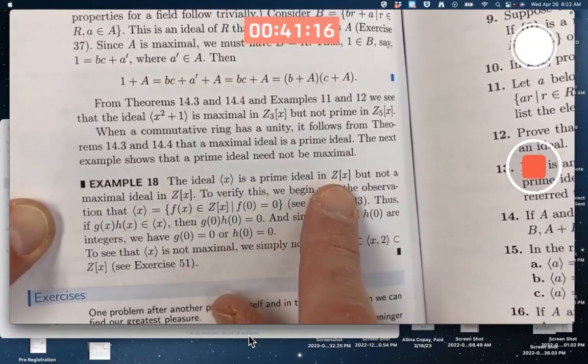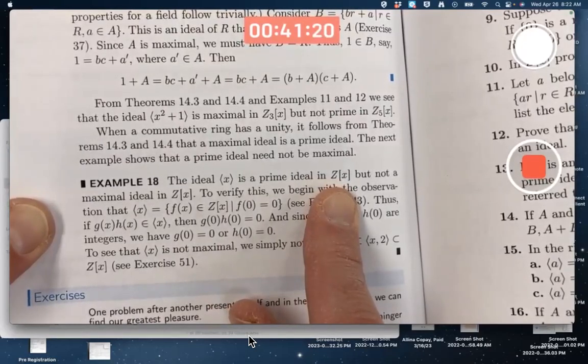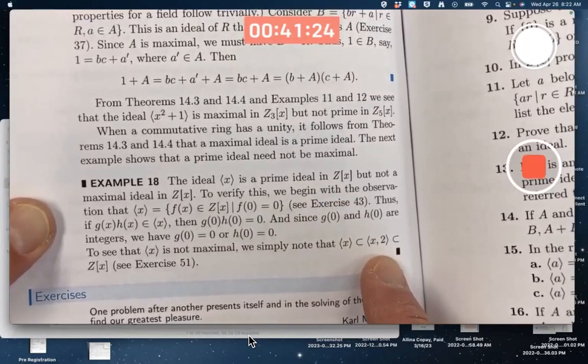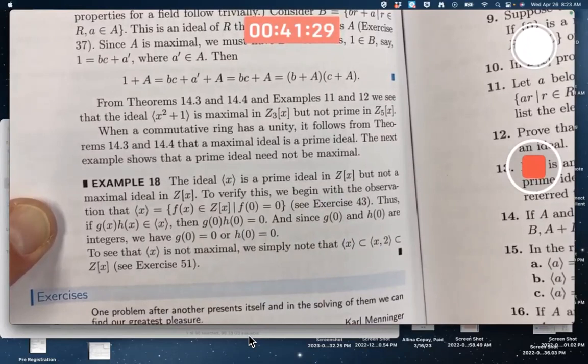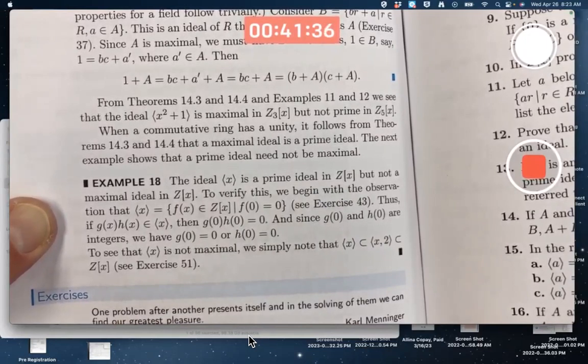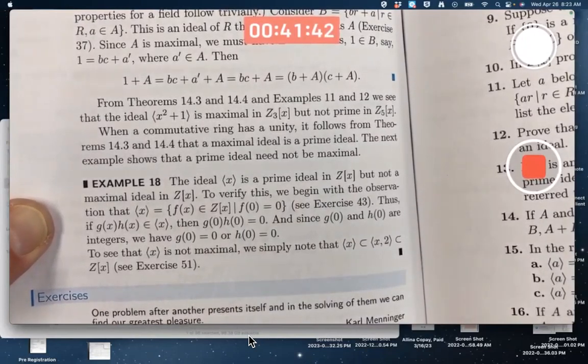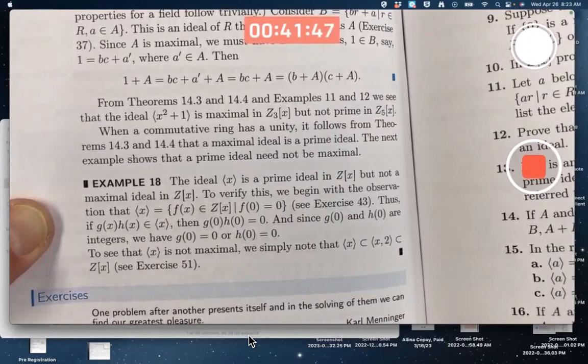But if you change Z[x] to R[x] or Q[x], then it turns out without proof that this actually must be the entire ring, because it's no longer polynomials with just even constant term. Because you're, for example, multiplying the constant polynomial 2 by an arbitrary polynomial with real coefficients—you can get a polynomial that's not an even constant term, it could even be an irrational constant term.